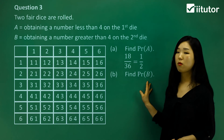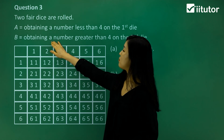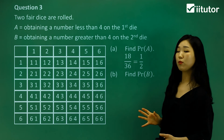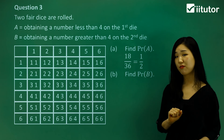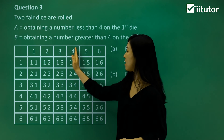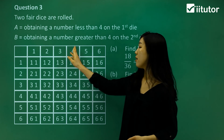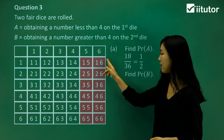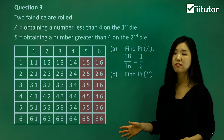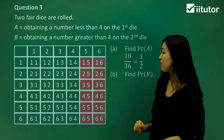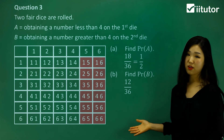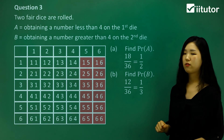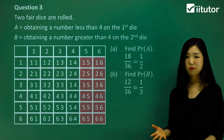Next, find the probability of B — obtaining a number greater than four on the second die, meaning five or six on the second die. That's two columns by six rows, giving twelve outcomes. So the probability is twelve out of 36, which simplifies to one over three — just divide top and bottom by twelve.